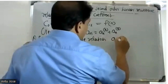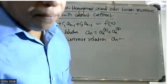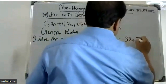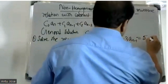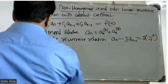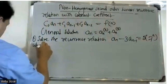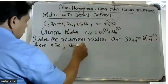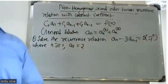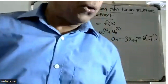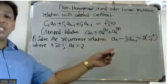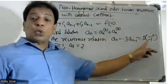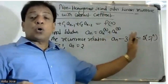Solve the recurrence relation: a_n minus 3·a_{n-1} equals 5·7^n, where n is greater than or equal to 1, and a_0 is given. The right-hand side is not equal to zero, so this is non-homogeneous.